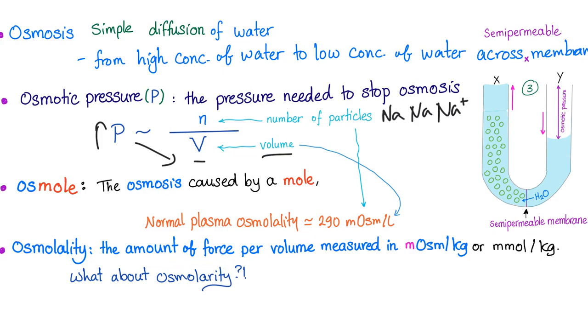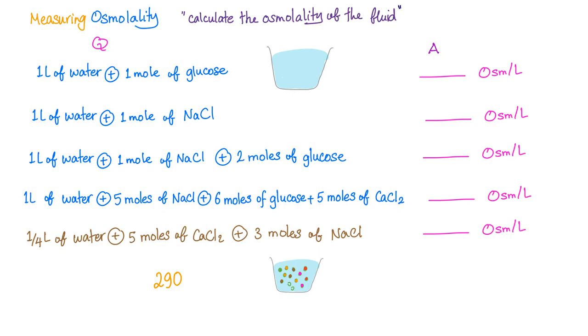Osmolality is the amount of force per volume measured in milliosmoles per kilogram or millimole per kilogram. What about osmolarity? This is the topic of next video. Now, let's try to answer these questions. Try to measure osmolality in each of them. So, you have one liter of water plus one mole of glucose. Calculate the osmolarity. The answer is, if you have one mole of glucose, it's non-ionizable, you're going to get one osmol per liter of water. Now, same thing. One liter of water, but now we have one mole of sodium chloride. Is this ionizable? The answer is yes. Sodium plus chloride. So, the answer here is two osmols per liter. Now, pause the video and try to do the rest.